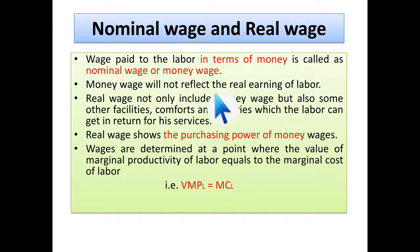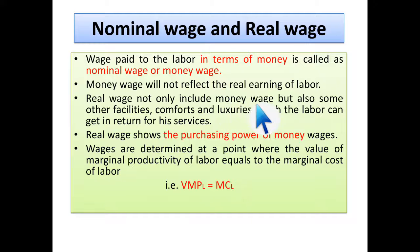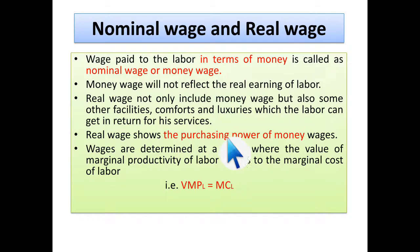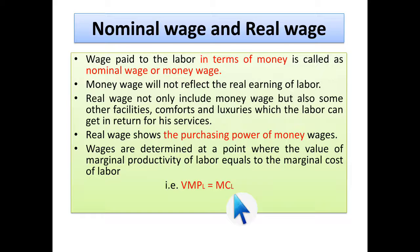The money wage does not reflect the real earning of the labor. Real wage not only includes money wage but also other facilities like comforts and luxuries which the labor gets in return for services. Real wage shows the purchasing power of money wages. Wages are determined at a point where the Value of Marginal Productivity of Labor (VMPL) equals the marginal cost of labor.